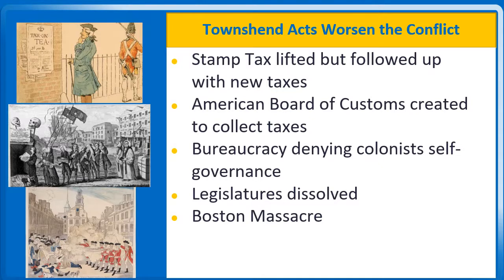Paul Revere's memorialized engraving of the massacre transformed the panicky soldiers threatened by a mob into a line of killers firing into a heroic cluster of civilians. Historian Gordon Wood described the engraving as perhaps the most famous piece of anti-military propaganda in American history. This version of events makes the British look like cold-blooded killers — not historically accurate, but powerful propaganda for independence. Now blood had been shed and the colonists began to talk about rebellion.